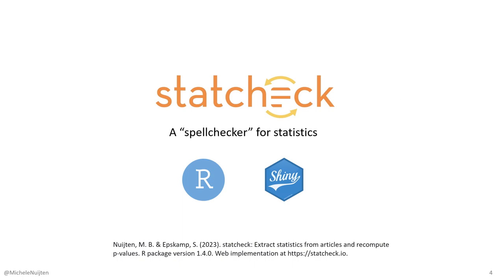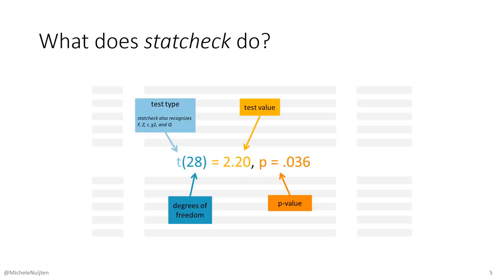This is why we developed StatCheck. StatCheck is effectively a spell checker for statistics. It's an R package and it also has a Shiny web app. StatCheck looks in articles for statistical results to see if they are consistent or not. You feed StatCheck an article, it searches through the text, and looks for statistical results that include a test type, degrees of freedom if relevant, a test value — 2.20 in this case — and a p-value.